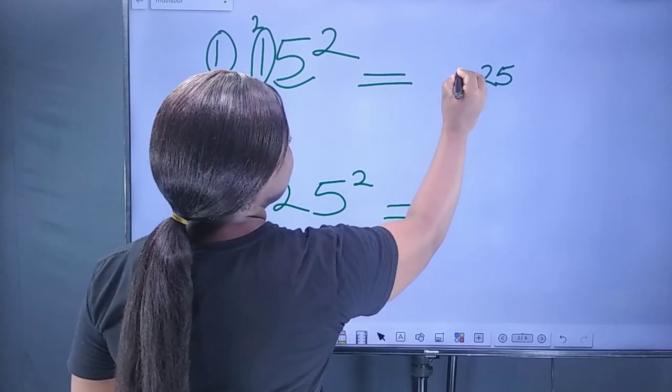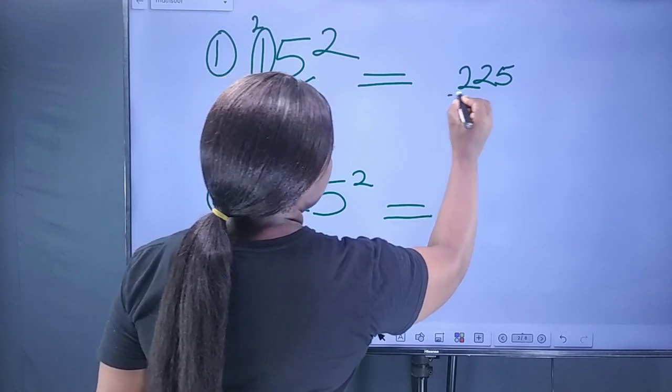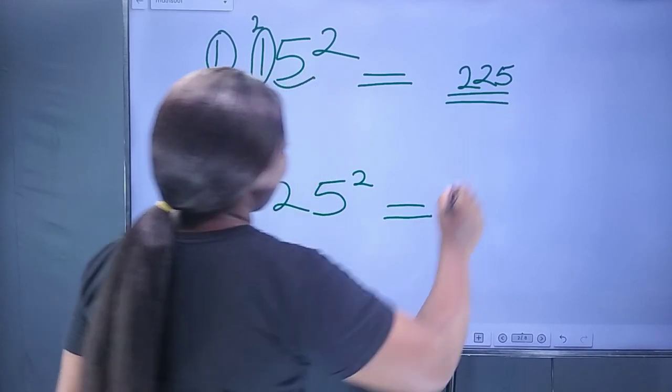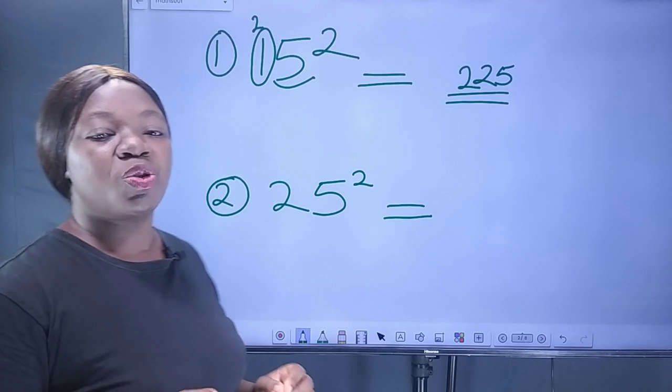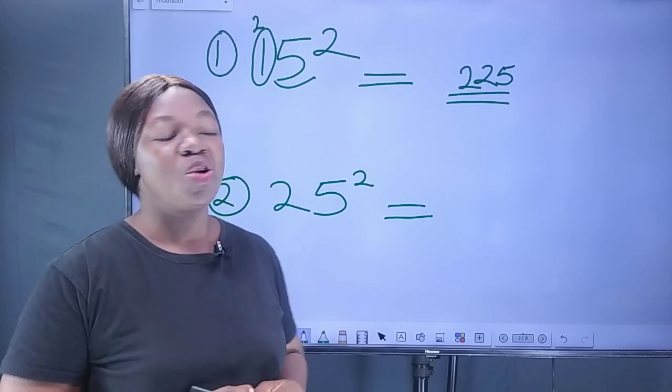So, 2 will be written on the left hand side of 25 which gives us 225. That is the simple trick to finding the square of 2-digit numbers that end with 5.